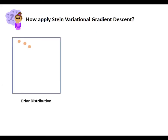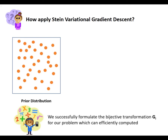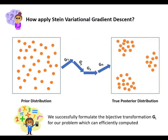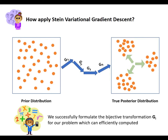Interestingly, we found that the Stein Variational Gradient Descent framework can help us overcome this barrier. First, we sample particles from the prior distribution of our model parameters. Then, we formulate the bijective transformation for our problem which can be efficiently computed. We use those transformations to step-by-step move particles from the prior distribution to the true posterior distribution. One advantage of SVGD is that at each step there are two forces with mutual support: the first pulls all particles to high density areas of the posterior distribution, while the second acts as a repulsive force, helping all particles cover all distribution modes.